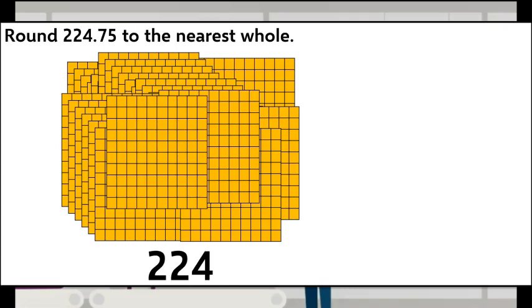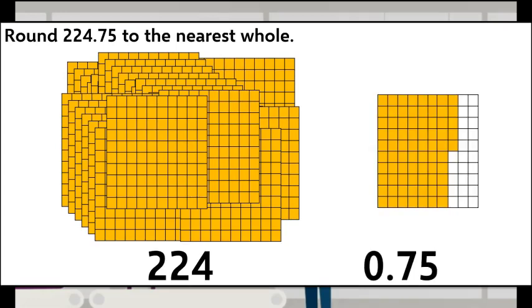Let's check out this problem by using 10 by 10 grids. We want to round 224 and 75 hundredths to the nearest whole. We have 224 whole grids colored in, plus a grid of 75 hundredths. This grid of 75 hundredths is more than halfway full. It's almost a whole. Since it's so close to being a whole, we can round it up to a whole, and combining it with the 224 would give us 225. So, 224 and 75 hundredths rounds to 225.